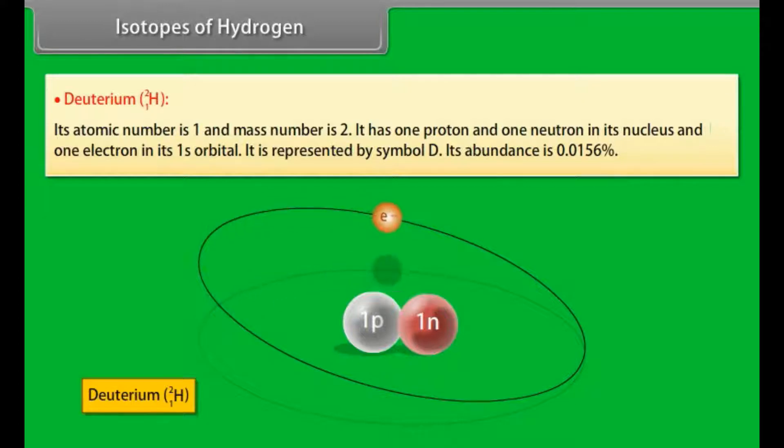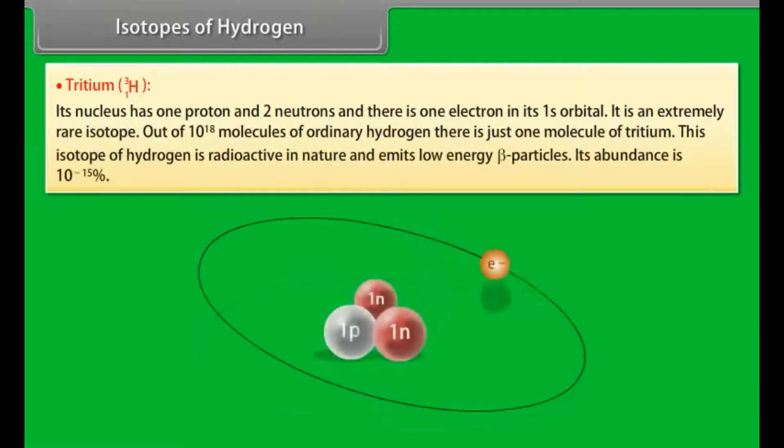Tritium: Its nucleus has 1 proton and 2 neutrons and there is 1 electron in its 1s orbital. It is an extremely rare isotope. Out of 10 to the power 18 molecules of ordinary hydrogen, there is just 1 molecule of tritium. This isotope of hydrogen is radioactive in nature and emits low-energy beta particles. Its abundance is 10 raised to the power minus 15%.